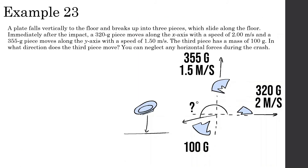Let's look at example number 23. A plate falls vertically to the floor and breaks up into three pieces which slide along the floor. Immediately after the impact, a 320 gram piece moves along the x-axis with a speed of 2 meters per second, and a 355 gram piece moves along the y-axis with a speed of 1.5 meters per second. The third piece has a mass of 100 grams. In what direction does the third piece move? You can neglect any horizontal forces during the crash.